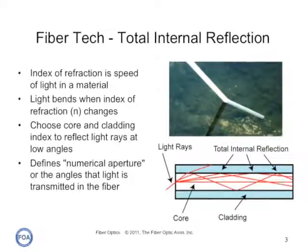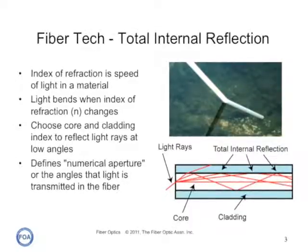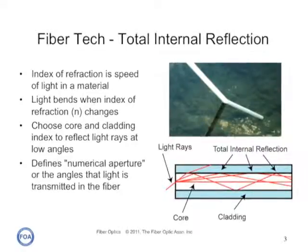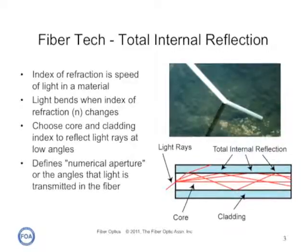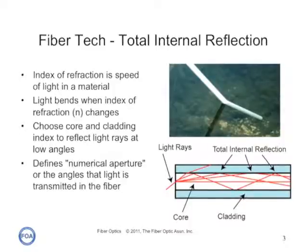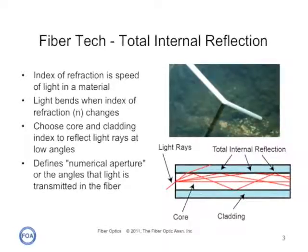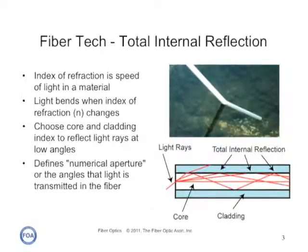At a certain angle, the light will be bent enough to actually be trapped inside the core of the fiber, and this is what we call total internal reflection. You can see this on the diagram of a step index optical fiber shown below. As the angle of the light becomes shallower and shallower, at some point all the light is trapped in the core.